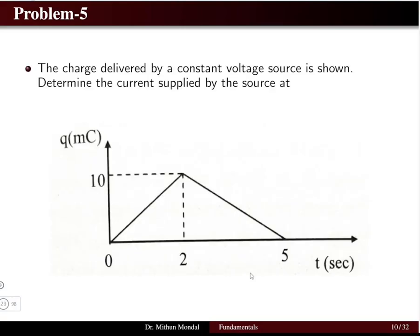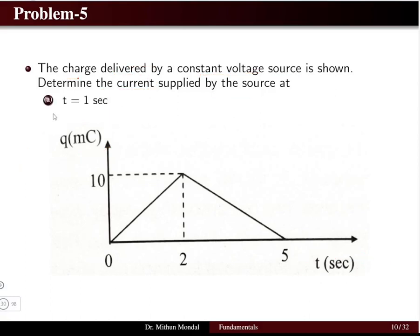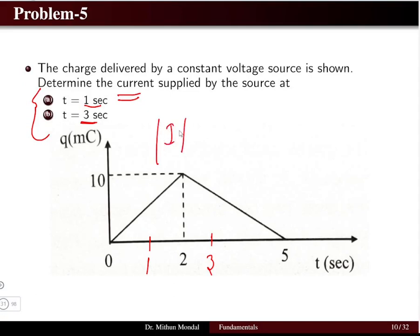Problem five: the charge delivered by a constant voltage source is given as a graph — charge in millicoulombs on the y-axis, time in seconds on the x-axis. We need to find the current at t = 1 second and t = 3 seconds.